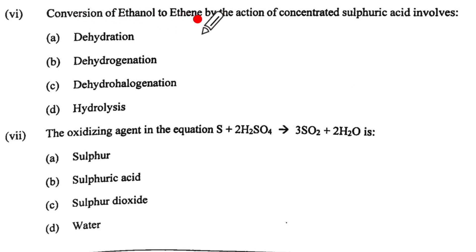Conversion of ethanol to ethene by the action of concentrated sulfuric acid involves. Now ethanol is like this. It will be a compound with two carbons with OH as the functional group and when this is removed H and OH in presence of concentrated sulfuric acid we will have C double bond C like this. This will be ethene. What has happened? Dehydration has taken place. So the correct option is A.